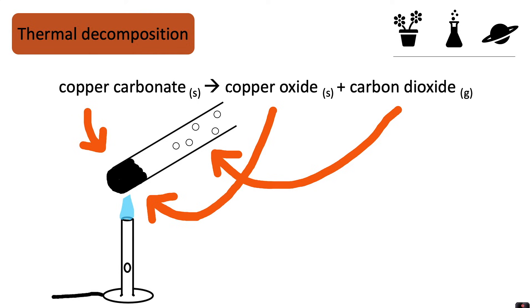So we can tell a chemical reaction is happening because we can see a gas given off and a color change. In this thermal decomposition reaction, we start off with copper carbonate. Using heat, we break that down into two products: copper oxide and carbon dioxide.